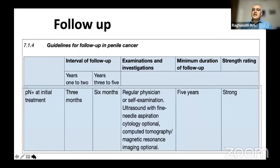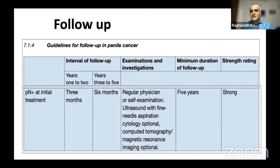For follow-up after management: if pathological lymph nodes are positive, see patients once every three months for the first two years. During the third, fourth, and fifth years, follow up once every six months. Minimum duration of follow-up should be five years, after which annual lifelong follow-up is advisable given risk of late toxicity from chemotherapy and surgery. At each visit: physical examination, self-examination guidance, ultrasound if doubtful lymph nodes are present, and optional FNAC, CT, or MRI when suspicious lymph node recurrence is found.